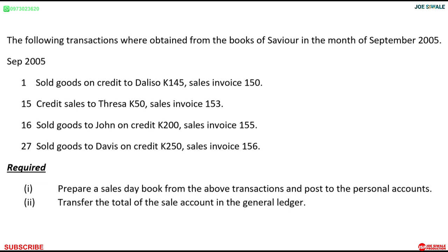The first transaction reads: sold goods on credit to Daliso amounting to 145 kwacha, sales invoice 150. Then on the 15th, credit sales to Treza amounting to 50 kwacha, sales invoice 153. On the 16th, sold goods to John on credit amounting to 200 kwacha, sales invoice 155. On the 27th, sold goods to Davis on credit amounting to 250 kwacha, sales invoice 156.